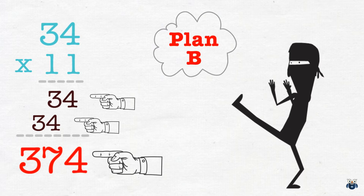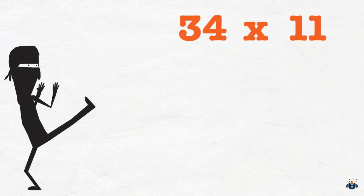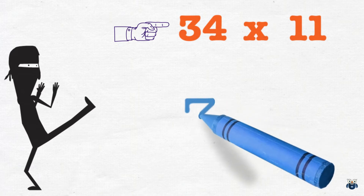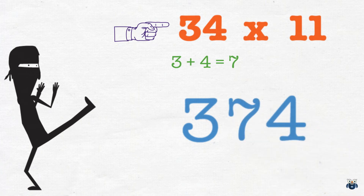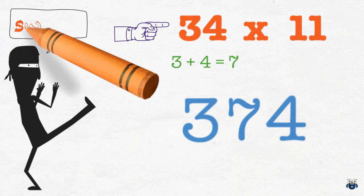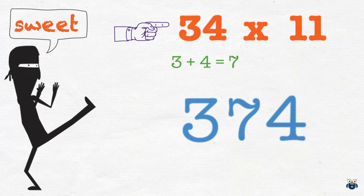Let's look at an alternative method used in multiplication by 11 problems. Let's see how it works by applying it to the problem we just saw: 34 times 11. Now let's focus on the Multiplicand. I am going to write down both digits with a gap in between them. Now let's add up the digits — 3 plus 4 is equal to 7. Let's put the 7 into the gap. We are left with 374, which is the correct answer.